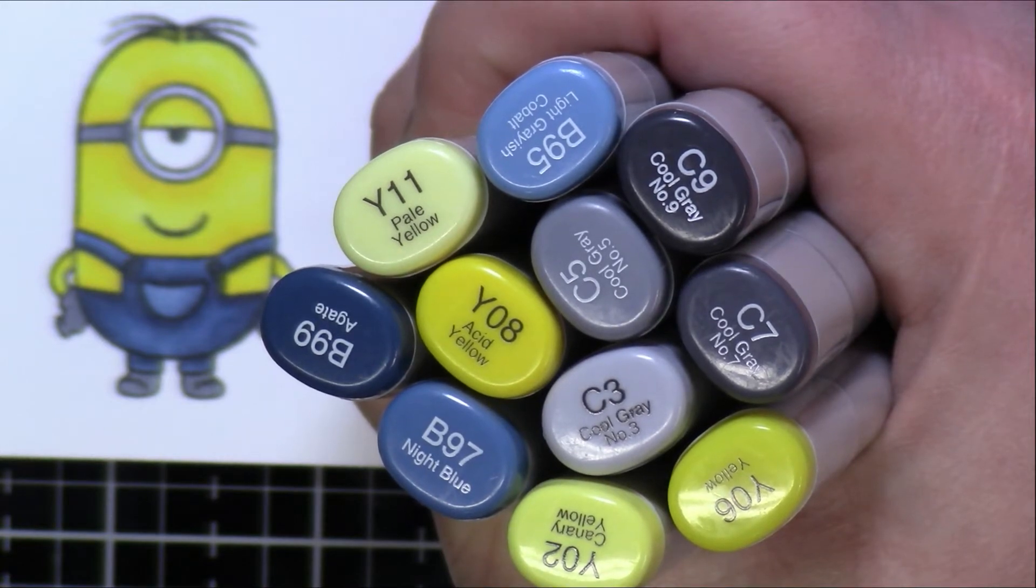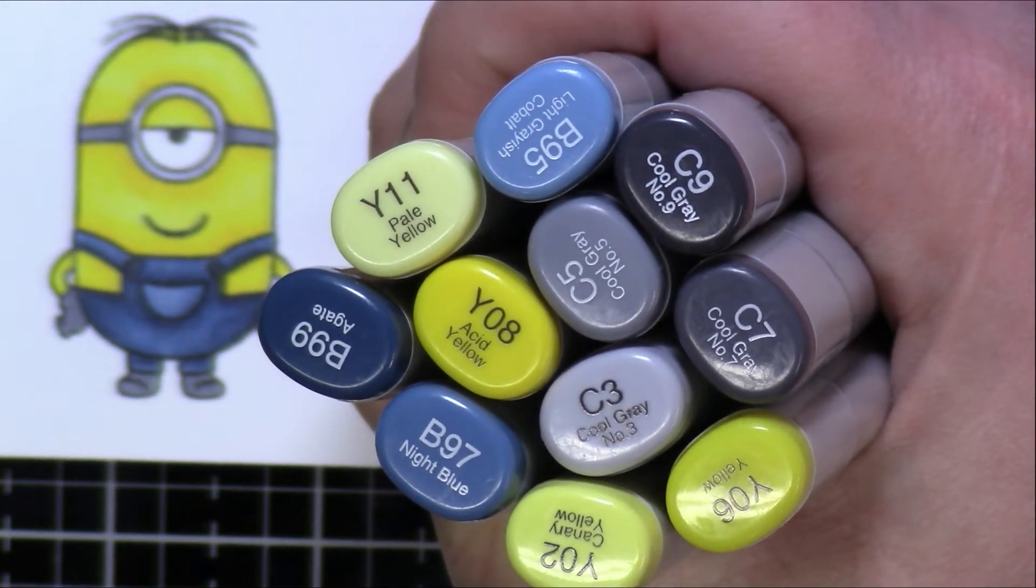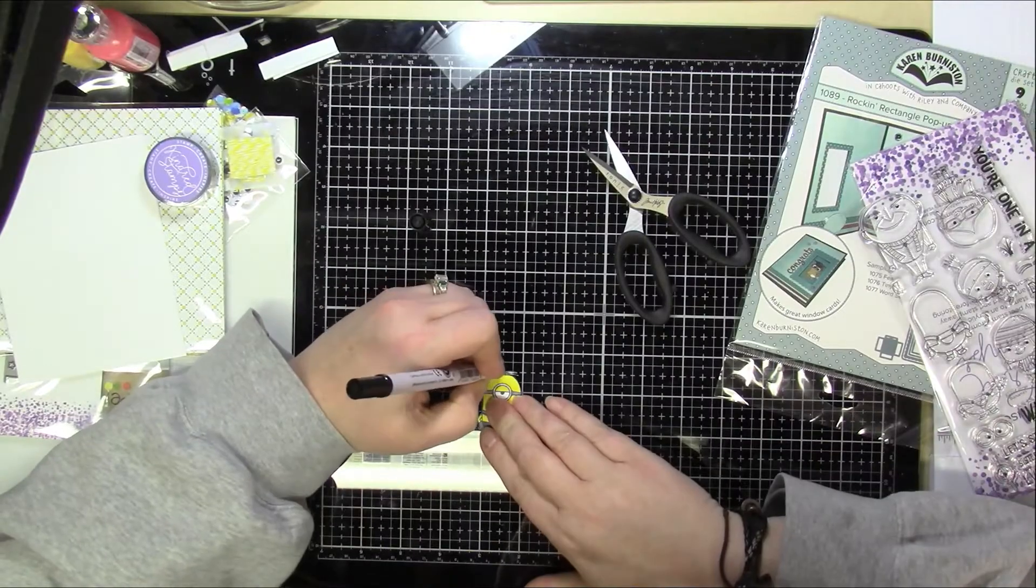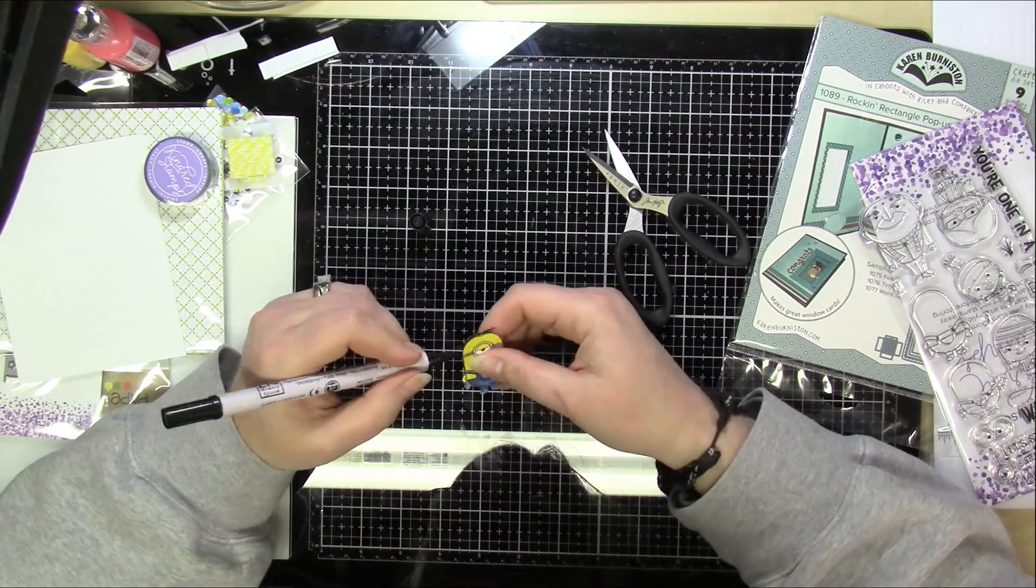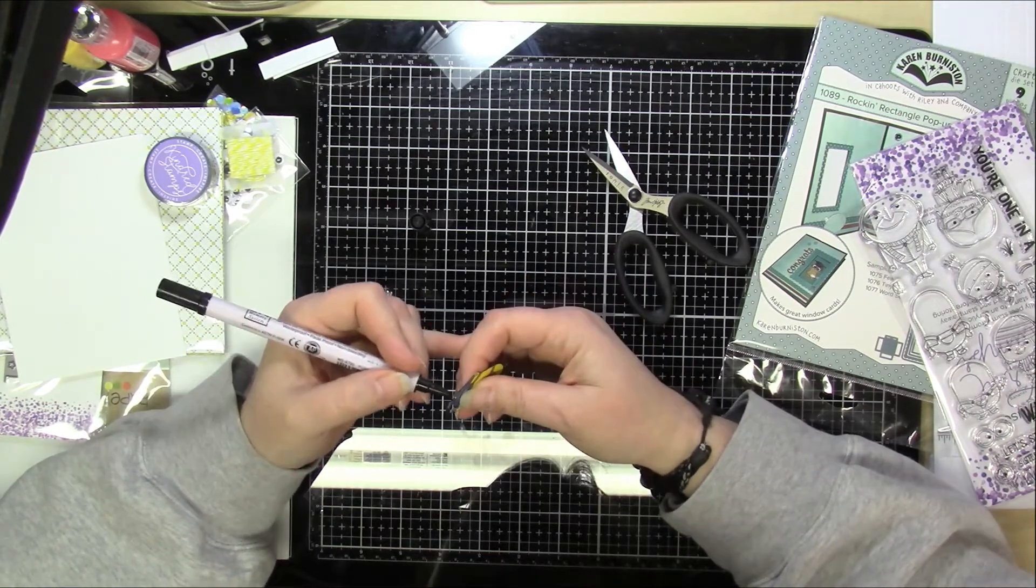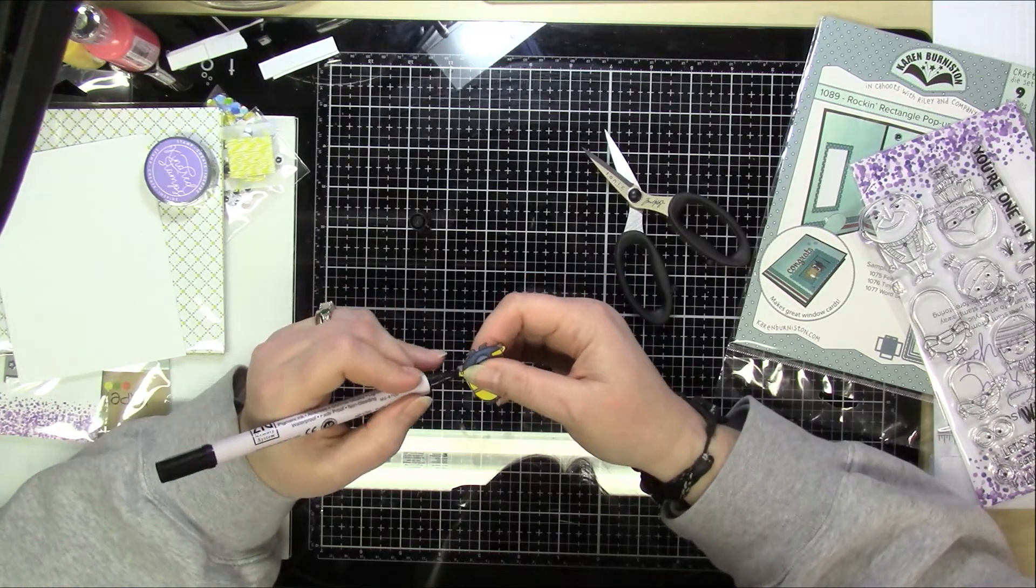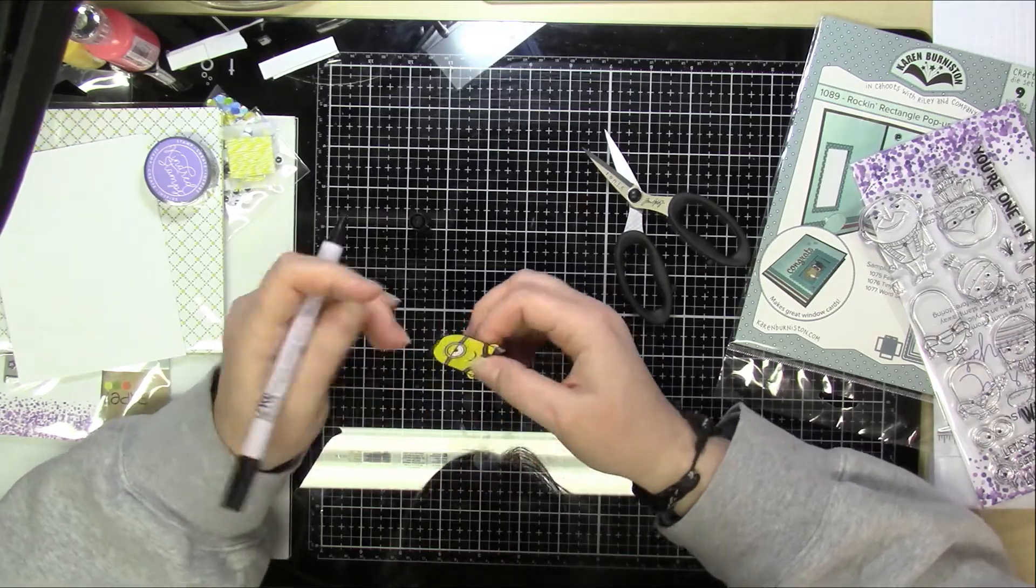And to start off what I did was I cut out all of the pieces that I'm going to be using. So I cut out this little guy and one thing I like to do with all of my images is to go over the edges with a black marker. It just kind of makes it look a little more finished and any imperfections in the cutting it will kind of mask or hide.